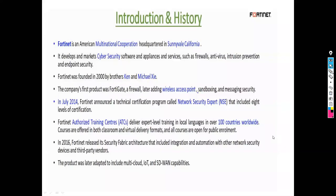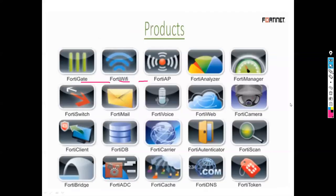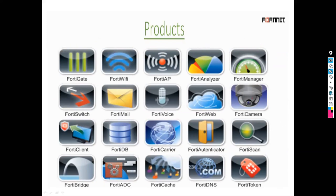FortiNet was founded in 2000 by two brothers, Ken and Michael. The company's first product was the FortiGate firewall, later adding wireless access points, sandboxing, and messaging security. FortiNet has a complete product list: FortiGate firewall, FortiWiFi, FortiApp, FortiAnalyzer, FortiManager, and multiple other devices — just like Cisco has a complete solution for data centers, routing, switching, and enterprises.